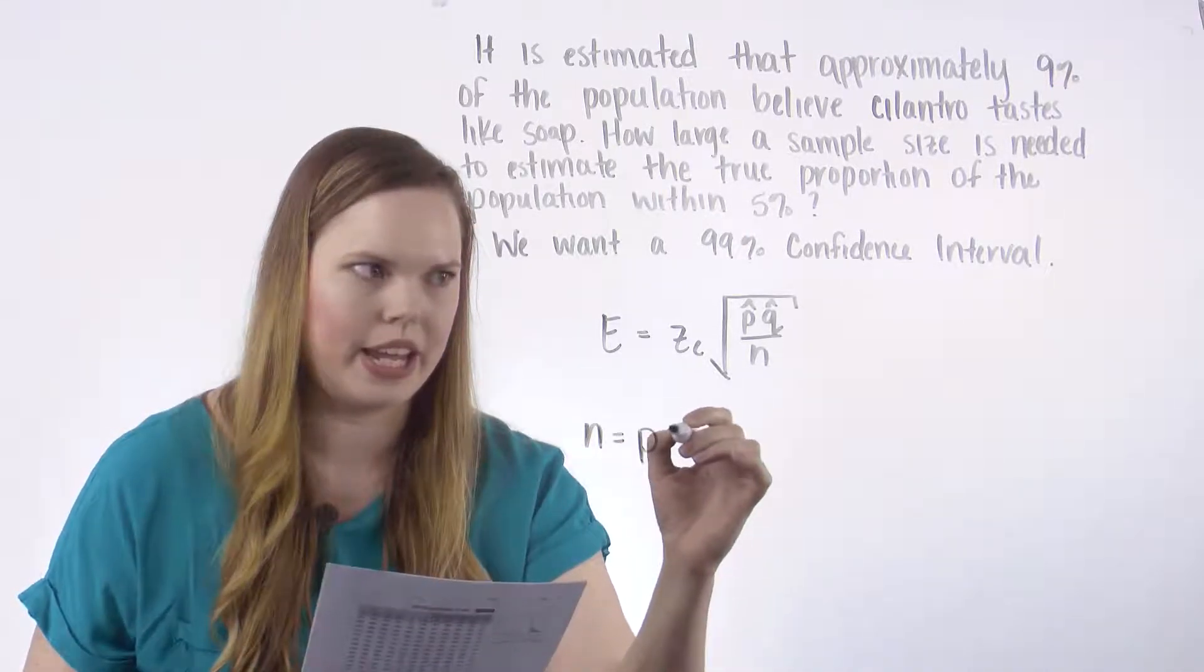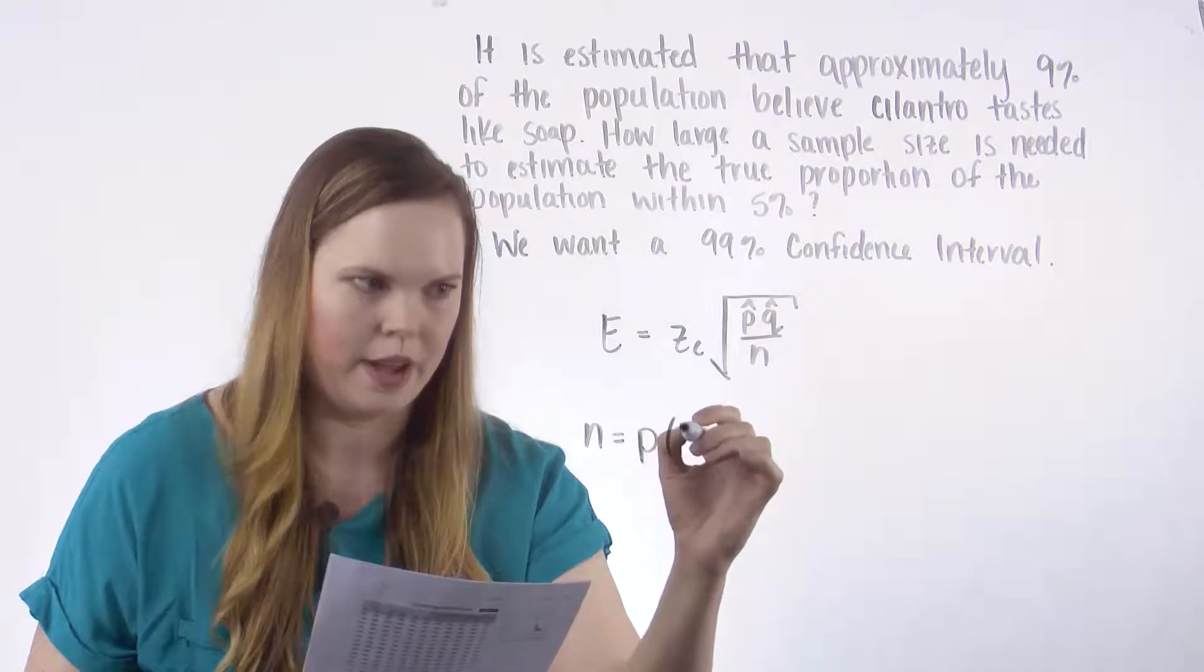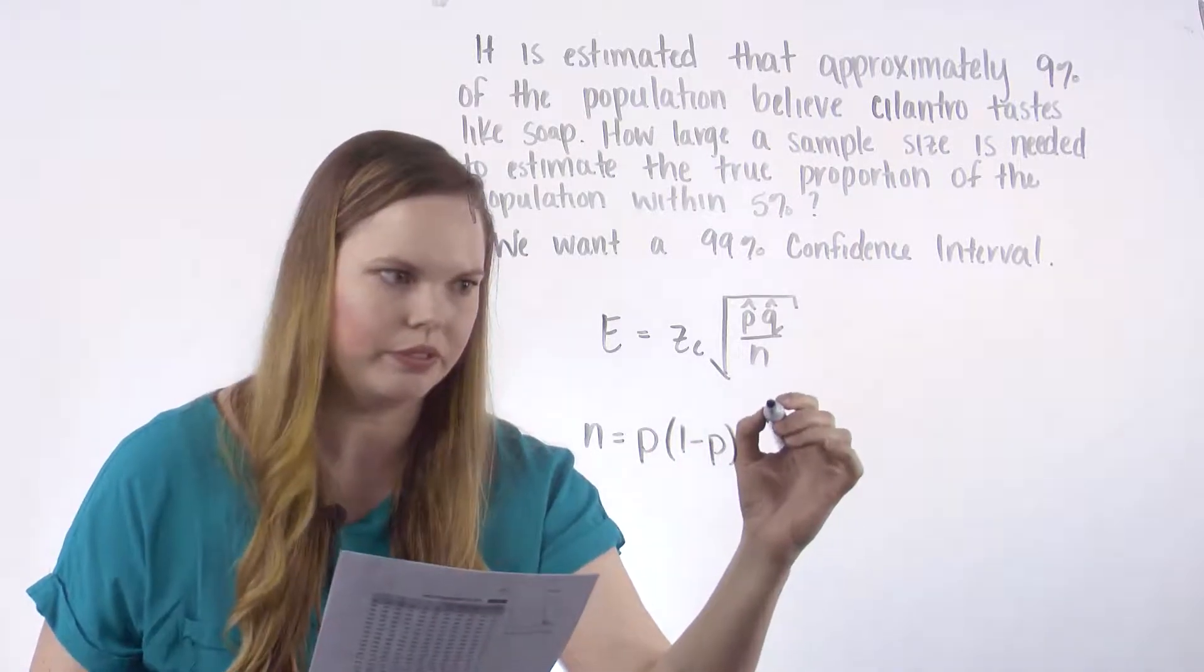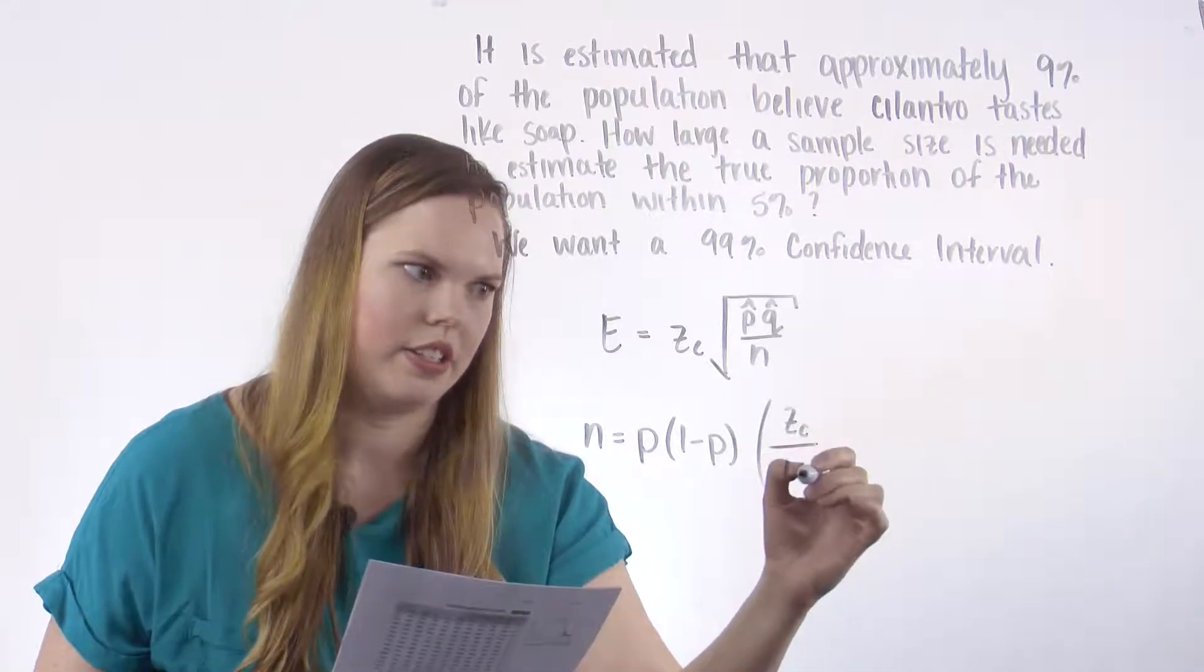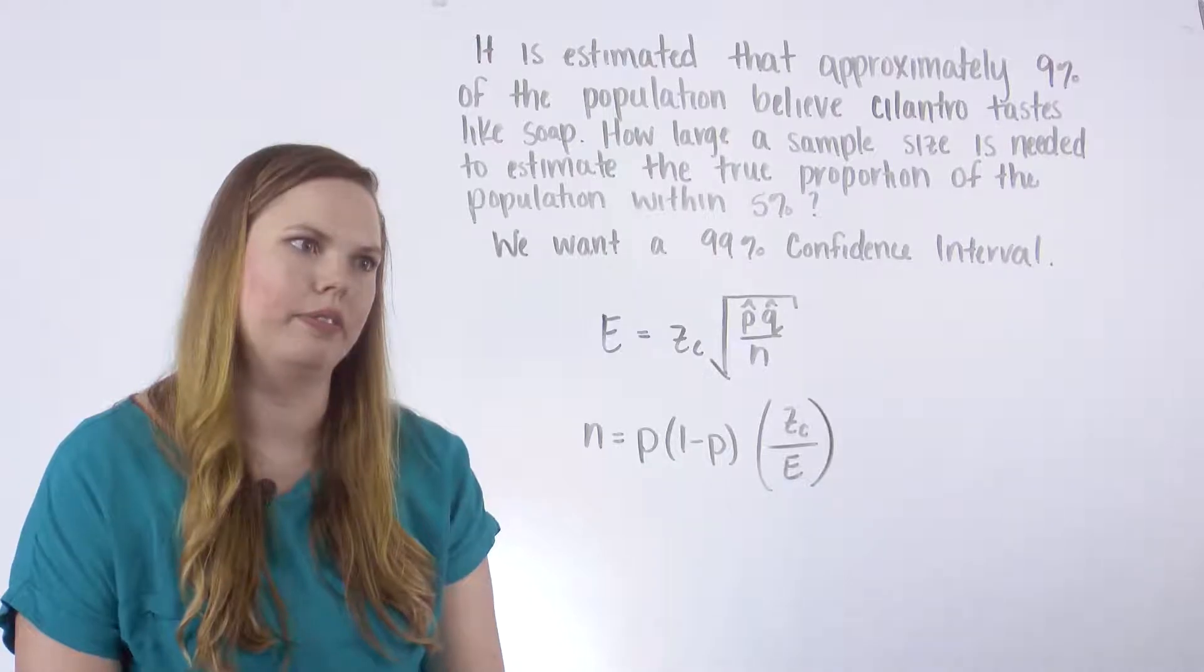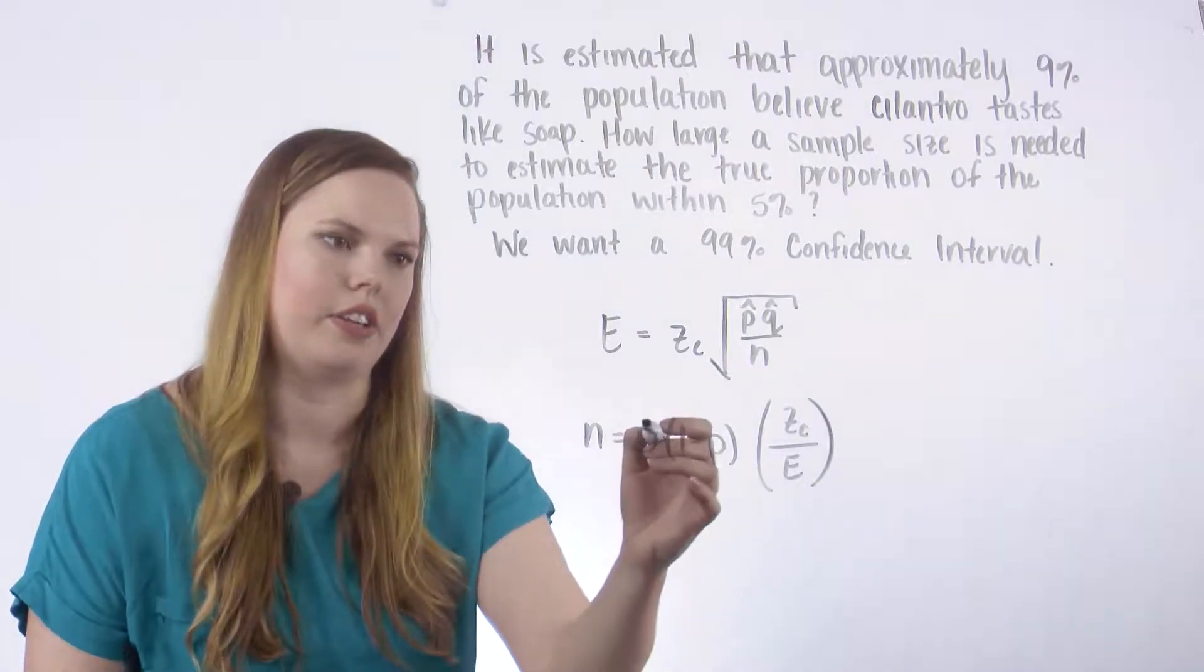And n is equal to p hat times 1 minus p hat, which is just q hat, times z sub c over e squared. These are hats.